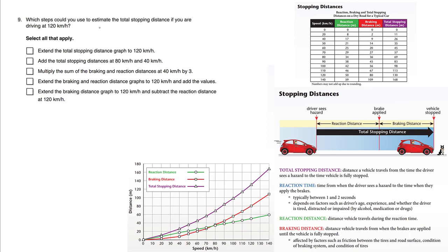Which steps could you use to estimate the total stopping distance if you are driving at 120 kilometers an hour? Select all that apply. So there may be more than one correct answer.